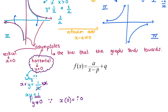There's a vertical asymptote at x equals zero because x is not allowed to be zero since it's in the denominator. Both asymptotes occur because they represent values the graph isn't allowed to be.